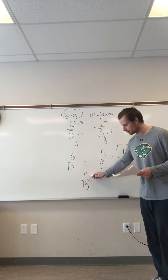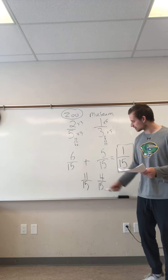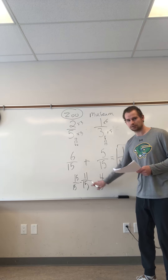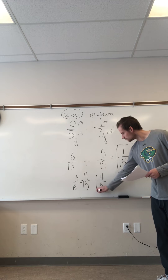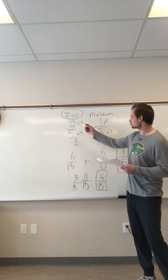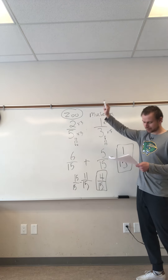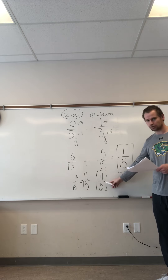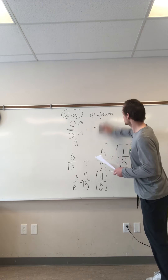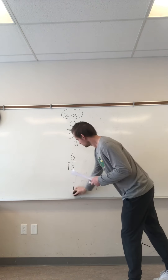Part C: what fraction of the class did not vote? Let's look at our fractions again. If we have six out of fifteen and five out of fifteen, the total number of people who voted — we add those together. Six plus five is eleven, so eleven out of fifteen people voted. What fraction didn't vote? Fifteen out of fifteen minus eleven out of fifteen gives us four out of fifteen. So four students out of fifteen did not vote.